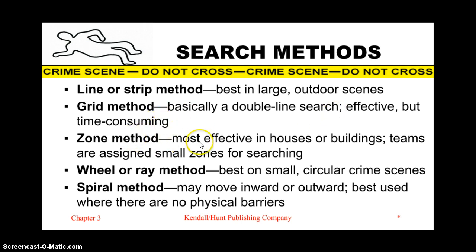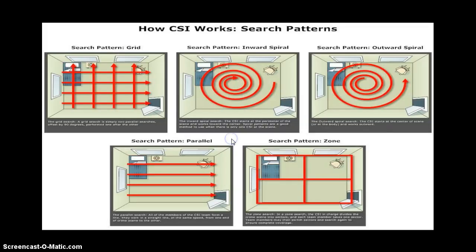The zone method is good if you have different rooms in a house, so you can focus people on different zones. The wheel or array method is used when the area is sort of circular. The spiral method is used if you don't have any physical barriers blocking you from moving inward or outward. Here's a diagram showing the different search patterns used to cover the most ground possible.